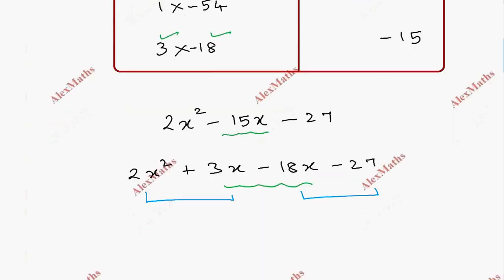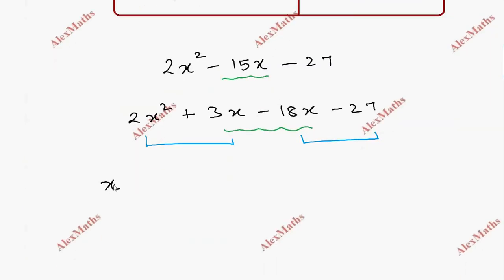The first term is x, so this is 2x plus 3, and if we have the minus 9. 2x plus 3 is common, 2x plus 3 into x minus 9.